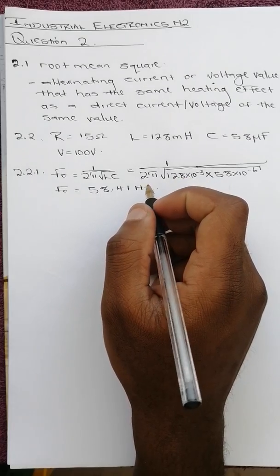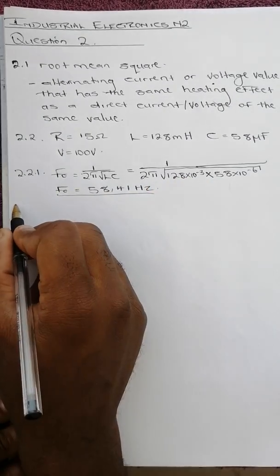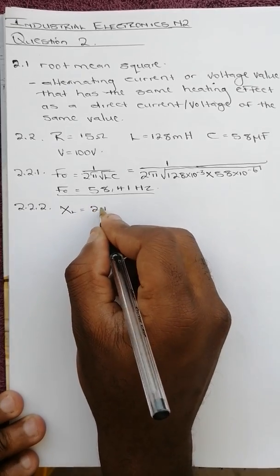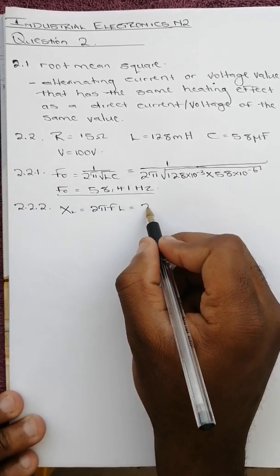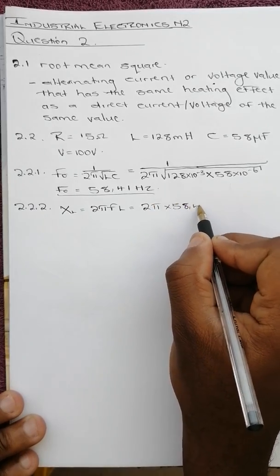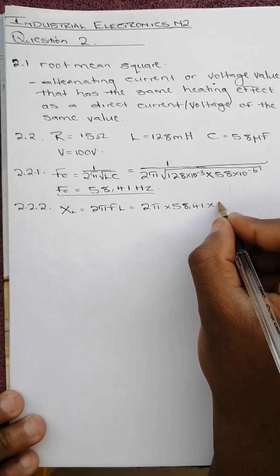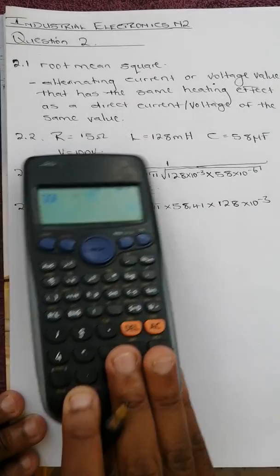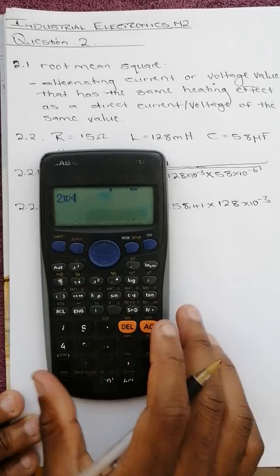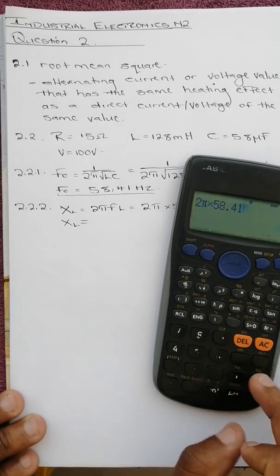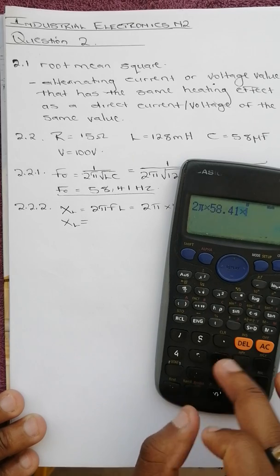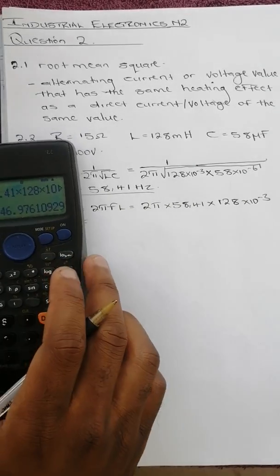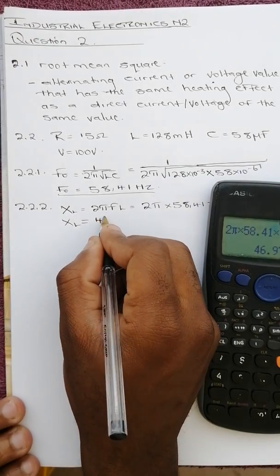Then question 2.2.2 says calculate the inductive reactance. XL equals 2 pi FL which is 2 pi times F is 58.41, times L is 128 times 10 to the power negative 3. This gives us 46.98 ohms.